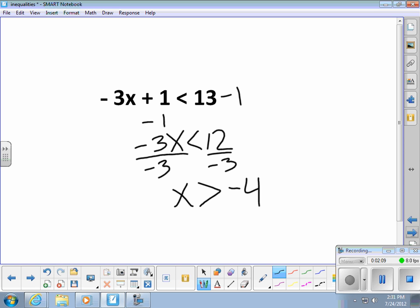So, any number that's greater than negative 4. Well, negative 3, for example. Let's plug in a negative 3. Negative 3 times negative 3 is 9, plus 1 is 10, and that is less than 13. So, it checks out as correct.